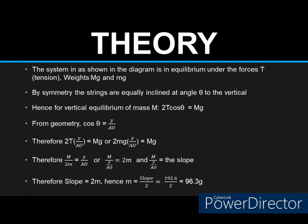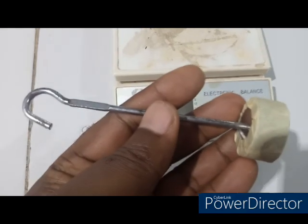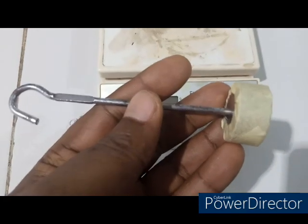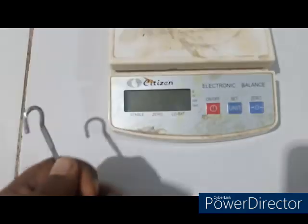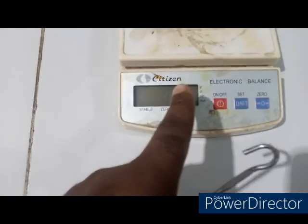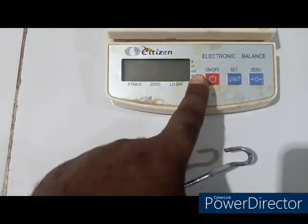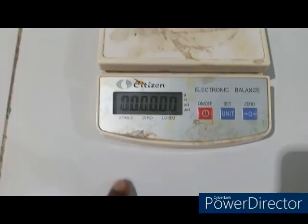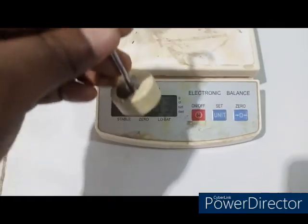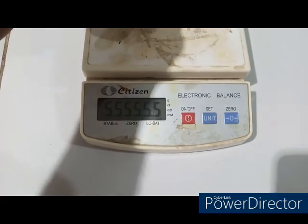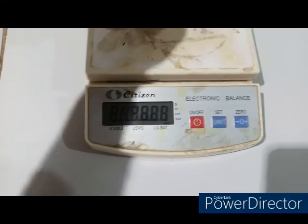And if we make m subject of formula, we would get that 2m is equal to the ratio of capital M all over Y over AO, and that is our slope. So it means that our slope is equivalent to 2m. So if we finally deduce m, m will be equivalent to 96.3 grams.